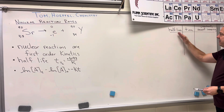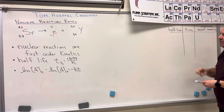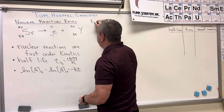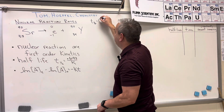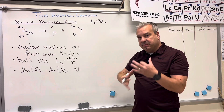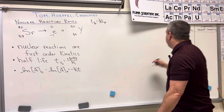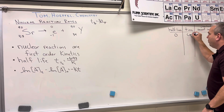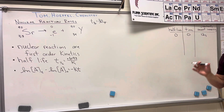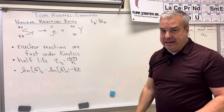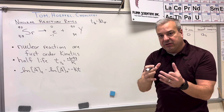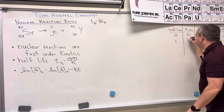From the problem we find that the half-life for this particular reaction is 30 years — so every 30 years this reaction experiences one half-life. At time equals zero, we start with an initial amount of 12 grams of strontium-90.